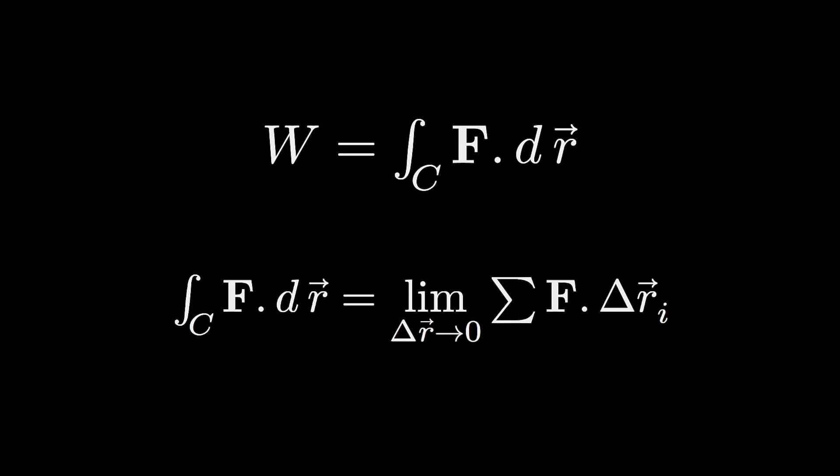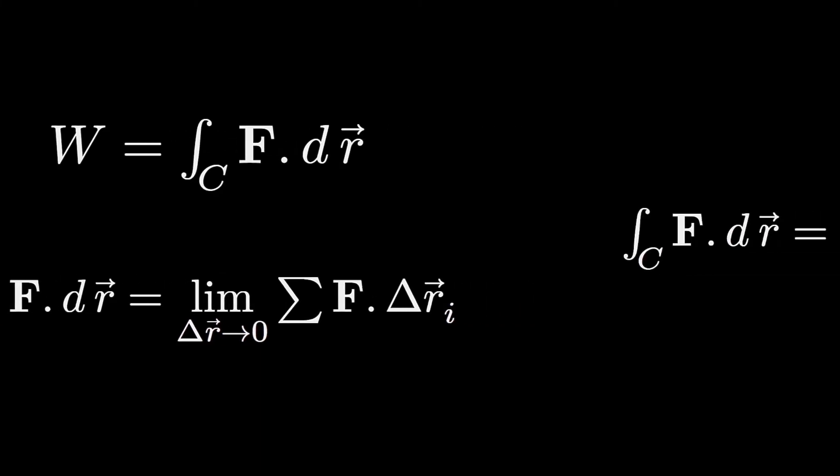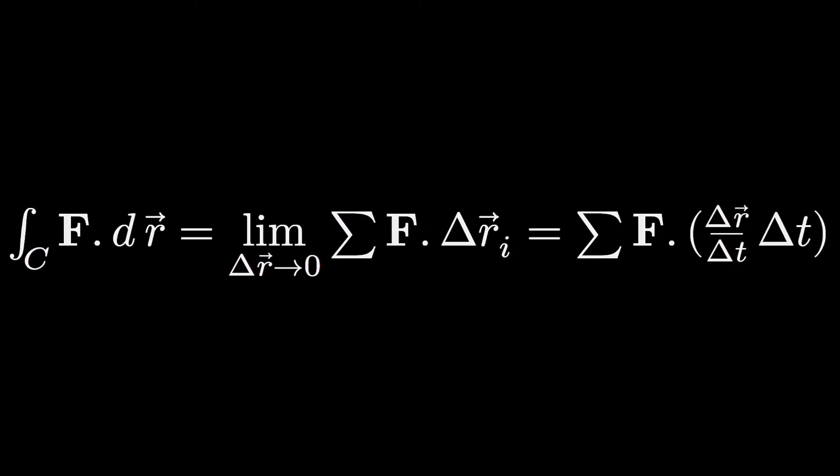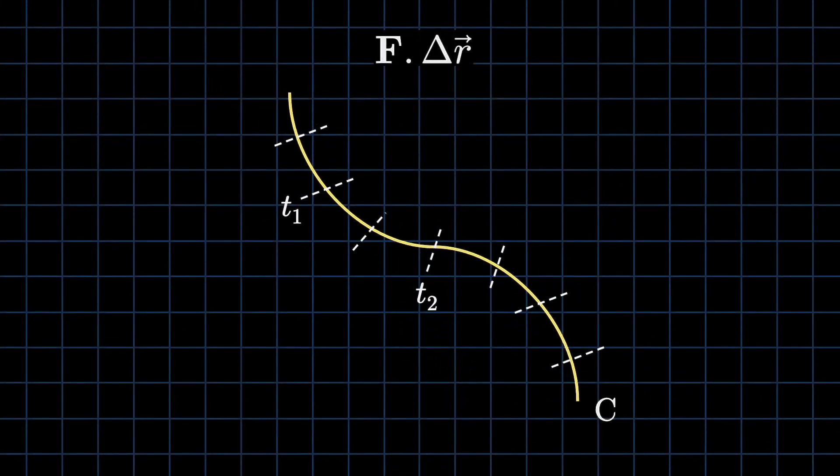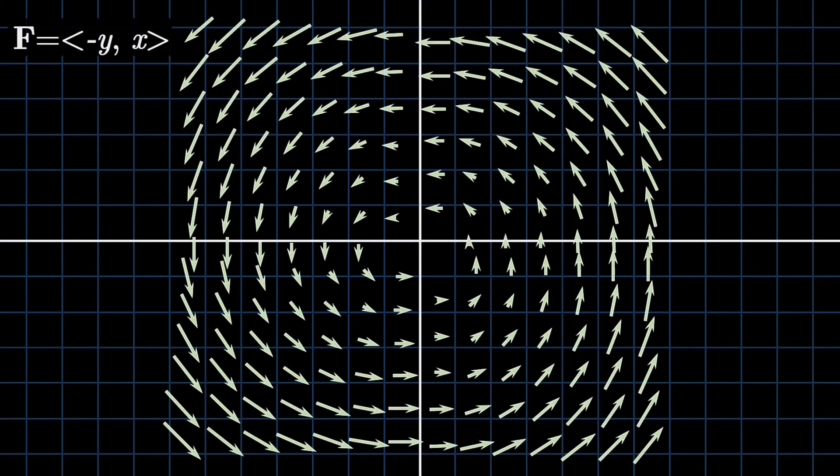This can be approximated as the path integral over C of F · dr equals the limit while Δr approaches 0 of the sum of F · Δr_i. To compute this, we can deduce that the path integral over C of F · dr equals this whole limit, where Δr/Δt · Δt is actually the velocity of the vector, dr/dt. So we can put our results and deduce that now we have the integral from t₁ to t₂ of F, which is our vector field, multiplied by dr/dt dt, where t₁ and t₂ are the time interval, which can be shown in our line as the following. We are taking a picture of our system at every Δt and adding them together. This is the basis of how to calculate line integrals.